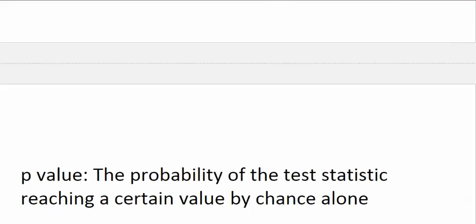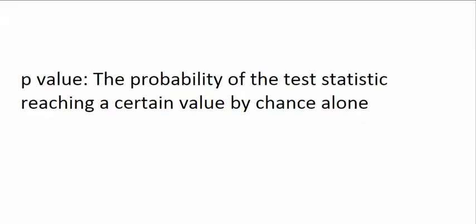First, we have to go over the definition of a p-value. In a hypothesis test, the p-value is the probability of the test statistic reaching a certain value by chance alone — really just a more technical way of saying the probability of the observed outcome reaching a certain point by chance alone. As a simple example, let's imagine a series of 50 coin tosses. If you toss a coin 50 times and count the number of heads, one possible outcome is 30 heads out of 50, and that outcome has a p-value.